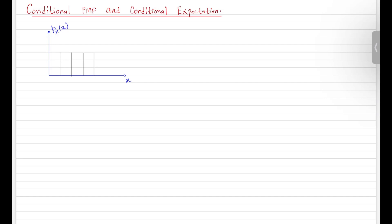We have the probability mass function of random variable X, which can take the values 1, 2, 3, and 4. Let's assume that X is a uniform random variable, meaning it takes the value 1 with probability 1/4, the value 2 with probability 1/4, and the same for all other values.